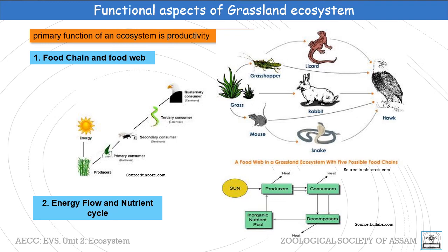Another important functional aspect is energy flow and the nutrient cycle. The source of energy is the sun, and from it the energy flows through the producers and consumers to decomposers, and finally the nutrients are recycled into the inorganic nutrient pool in the soil. We can see in this picture that at every level of energy transfer, heat energy is dissipated.